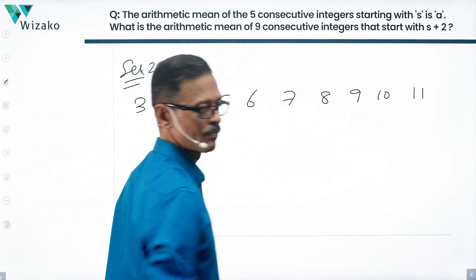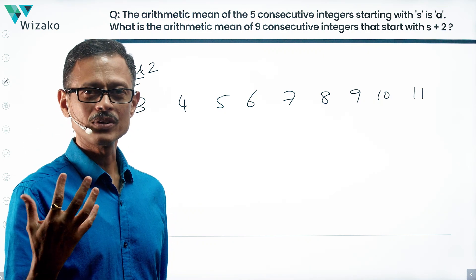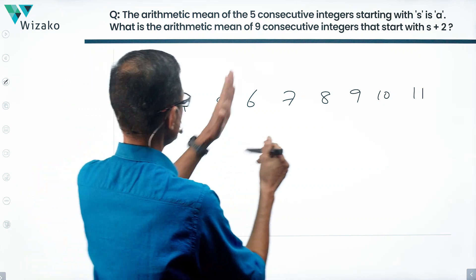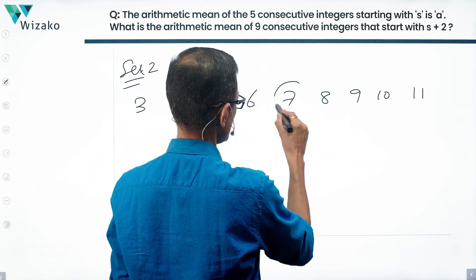We want the average of these 9 numbers. Again, these are all in an arithmetic progression. The middle number is going to be the average. Leave these 4 here, leave these 4 here. So this is going to be your average.